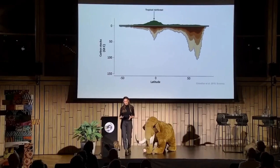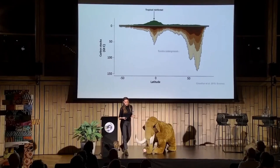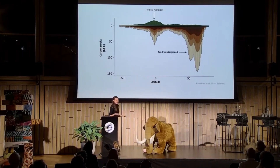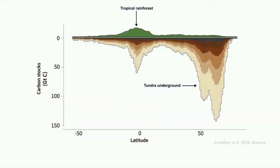A lot of people don't understand just how much this leads to intense carbon stocks underground. This is a paper published in Science in 2019, and it gives a snapshot of carbon stocks in tropical rainforest versus tundra underground. Understanding the underground is really paramount to our future.